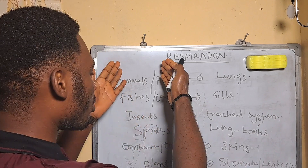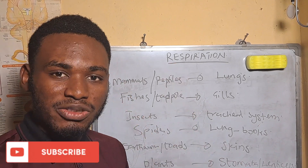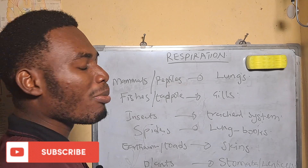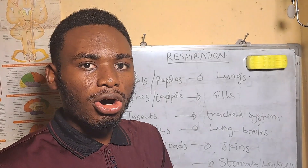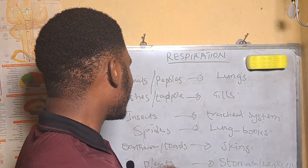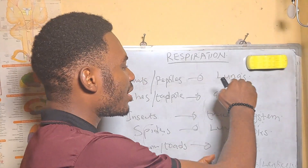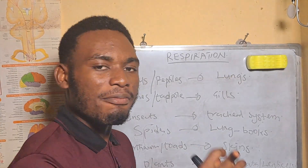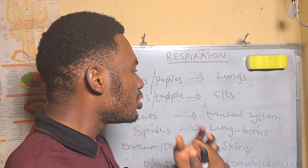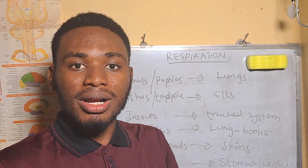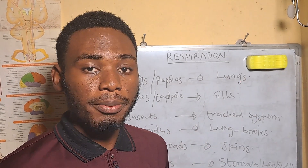In plants, they respire by stomata and lenticels. So these are the different systems and organs that living organisms use to carry out external respiration. Before we go through them one by one, let's discuss the features of a respiratory membrane, because these respiratory structures have membranes through which they respire.